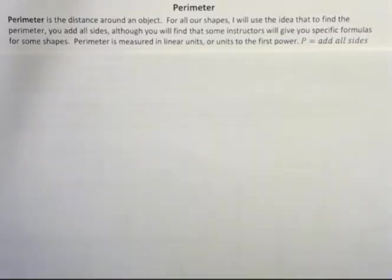Perimeter is the distance around an object. For all of our shapes, I will use the idea that to find perimeter, you add all sides, although you will find that some instructors will give you specific formulas for some shapes. Perimeter is measured in linear units, or units to the first power.